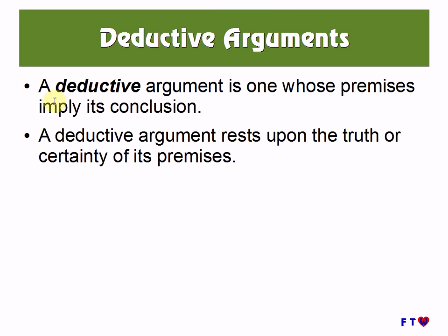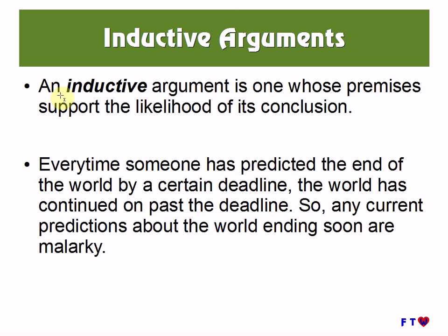So far we've been looking at deductive arguments. A deductive argument is one whose premises imply its conclusion, and it rests upon the truth or certainty of its premises. Besides deductive arguments, we have inductive arguments. An inductive argument is one whose premises support the likelihood of its conclusion. Here's an example: every time someone has predicted the end of the world by a certain deadline, the world has continued on past that deadline. So any current predictions about the world ending soon are malarkey.